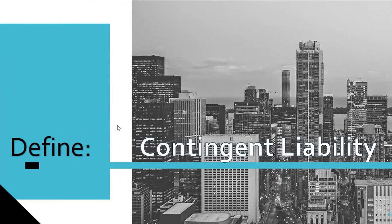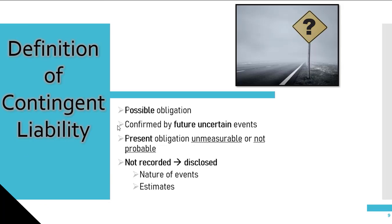Lastly, let's review how this differs from a contingent liability. A provision is of uncertain timing or amount, but it will happen — it's unavoidable — while contingent liabilities may or may not happen and could be very well avoidable. The recognition criteria for contingent liabilities are as follows: it needs to be a possible obligation that arises from past events, and existence will be confirmed by occurrence or non-occurrence of uncertain events not wholly in the control of the entity. Then, similar to a liability, you should discuss the probability and measurability.